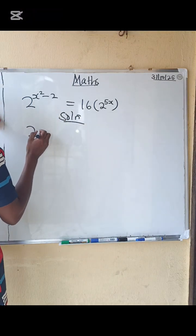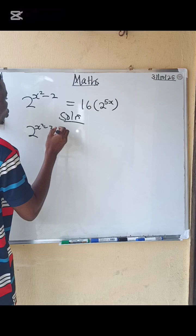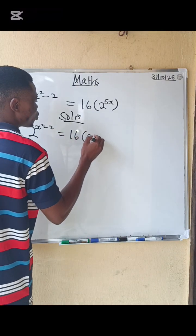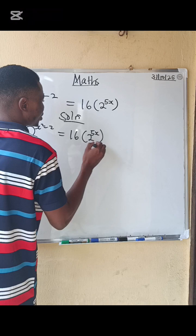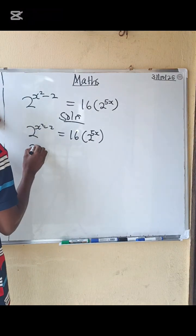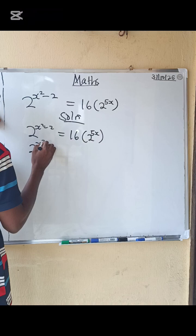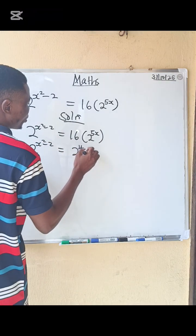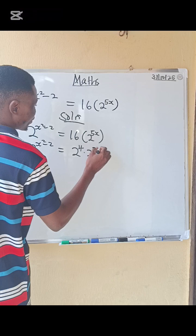We have 2 power x squared minus 2 equals to 16 into 2 power 5x. What do we do? We can reduce 16 to 2 power 4, right? So we have 2 power x squared minus 2 equals to 2 power 4 multiplied by 2 power 5x.